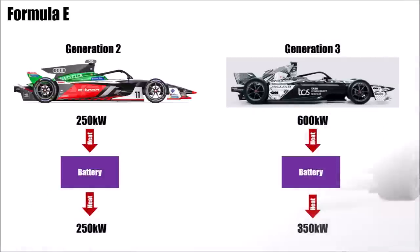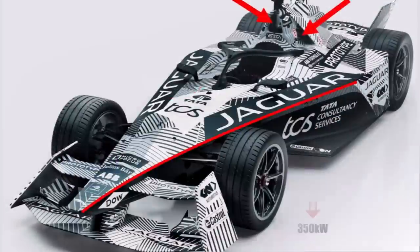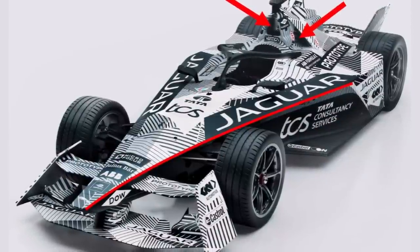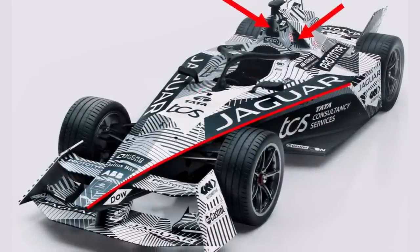This also means more work for the battery, because it needs to provide higher output than before and at the same time deal with a higher charging rate. In contrast to a combustion engine, both of these processes produce heat, so battery cooling is key. And now there is one electric motor in front and one at the back to cool. In that respect, it's interesting to see that they got rid of the side pod inlets and moved the intakes to the top centre of the car.